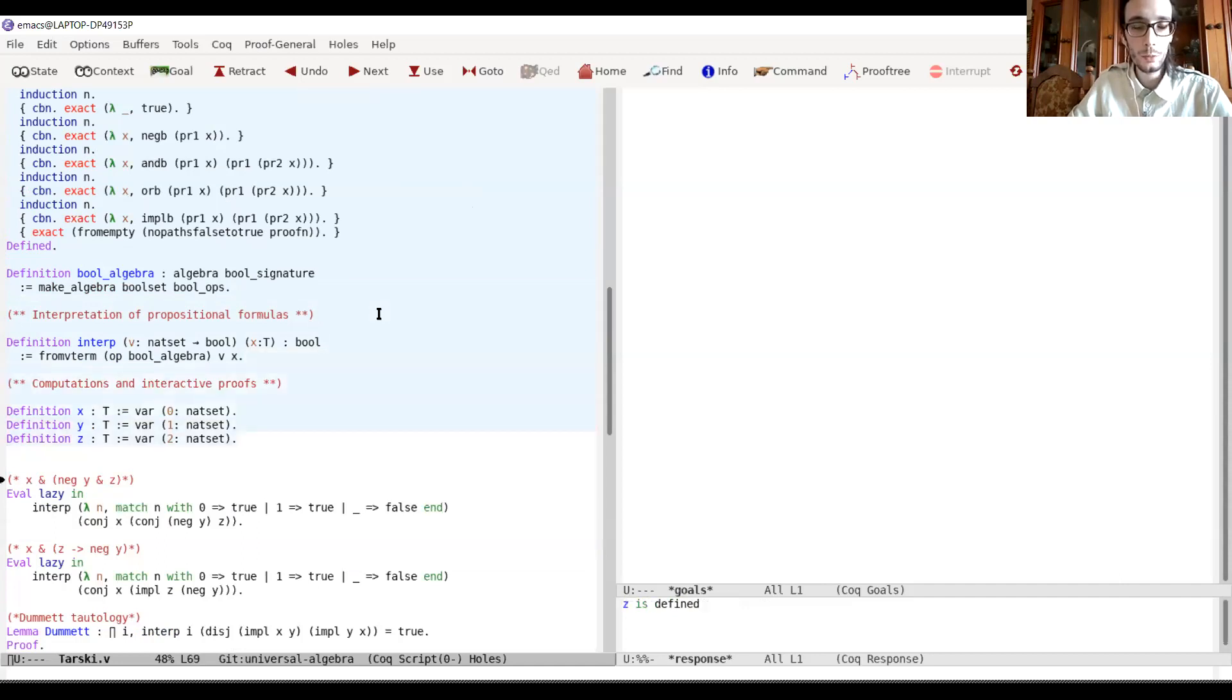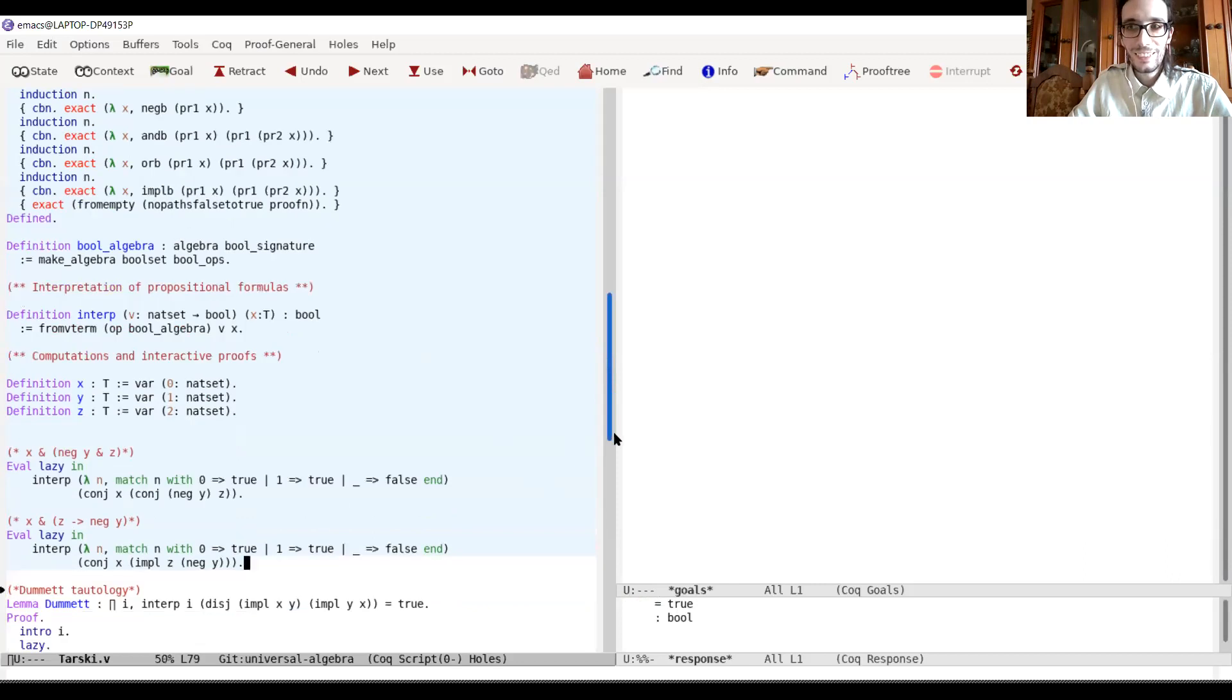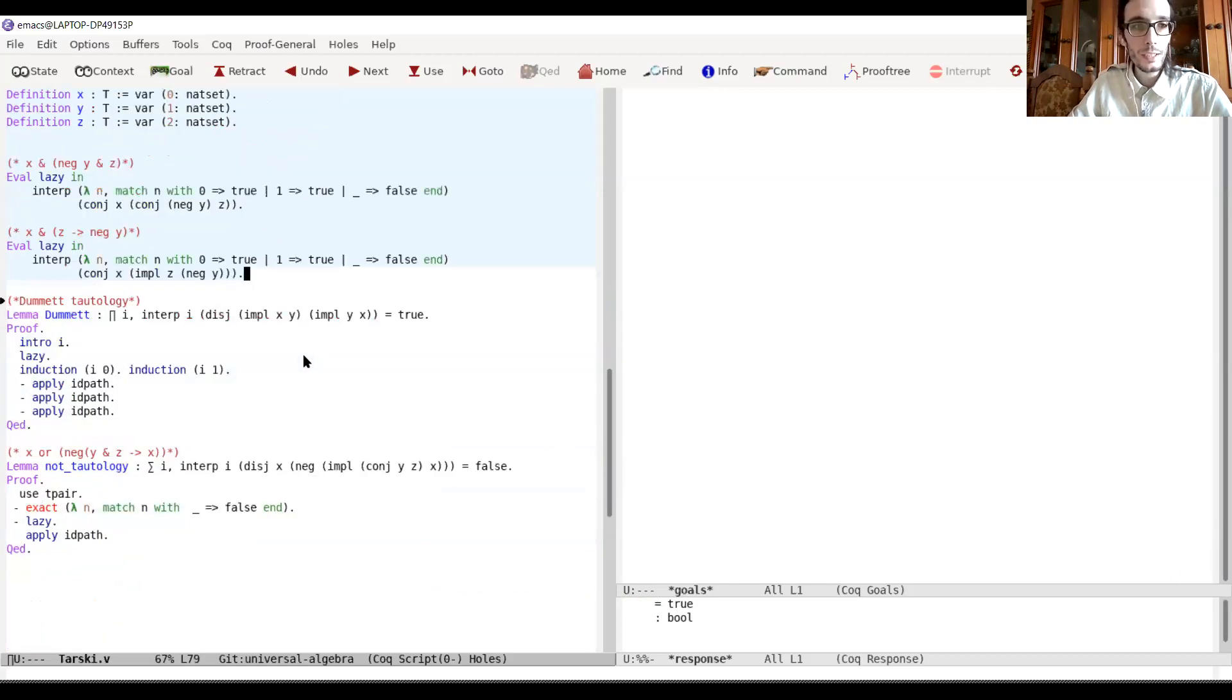So we can interpret a formula, a term of our extended signature, as a Boolean defining an interpretation for propositional formulas. And now, I want to show you that having x, y, and z atoms, propositional atoms, UniMath is able to evaluate quite easily the true value of formulas. For instance, x and not y and z, when x and y are true and z is false. And here, you see that UniMath returns false, as expected. Similarly, x and z implies not y returns true. So, it really works.